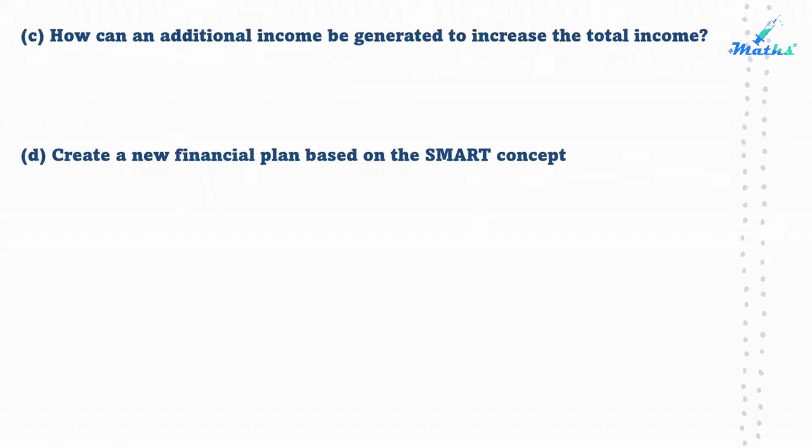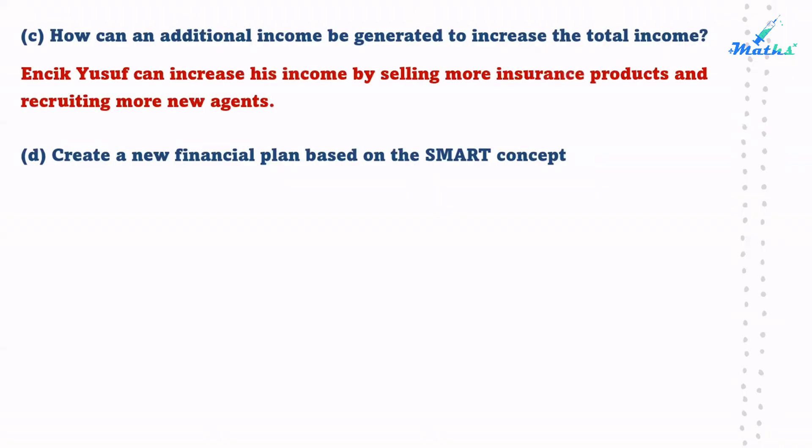Question C: How can additional income be generated to increase the total income? Enjad Yusuf can increase his income by selling more insurance products and recruiting more new agents.